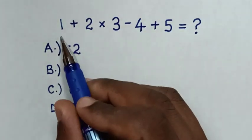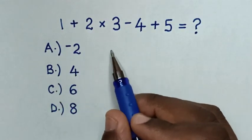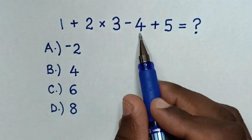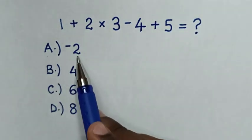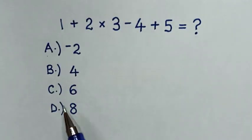Hello! How to solve 1 plus 2 times 3 minus 4 plus 5? Select between the answers A, negative 2, B, 4, C, 6, D, 8.